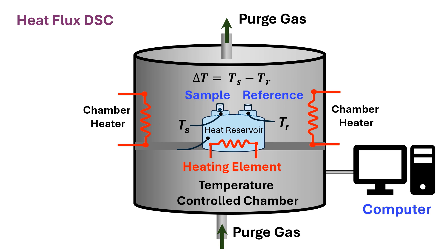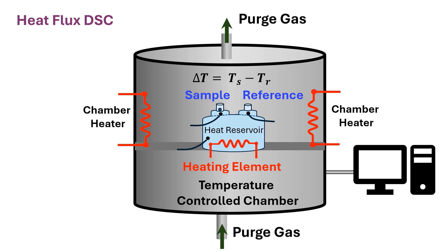Three temperatures are measured: TS (sample temperature), TR (reference temperature), and TV (reservoir temperature). In this system, the temperature difference — delta T, that is TS minus TR — is measured as a function of temperature. In the old system, delta T was plotted as a function of temperature. In the new system, heat flux is related to delta T using a more complex equation, and heat flux is measured. Finally, heat flow is plotted as a function of temperature or time while heating at a constant rate.